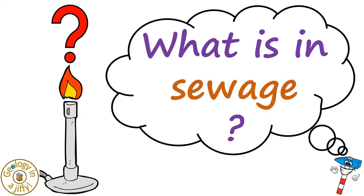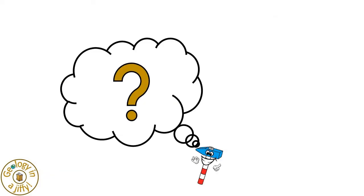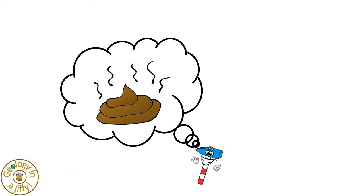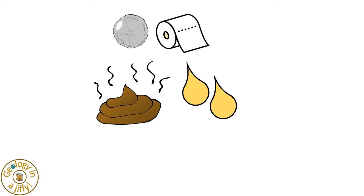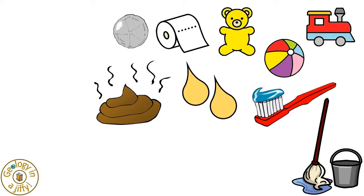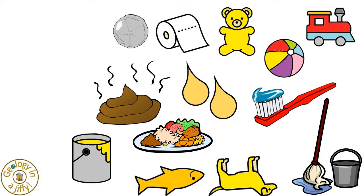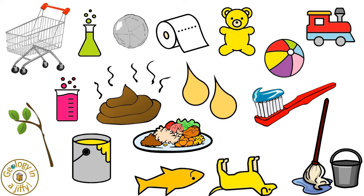What is in sewage? Most people just think of this — poo, correctly known as faeces. But sewage also includes all of these other things, and even shopping trolleys too.